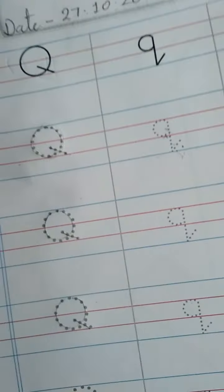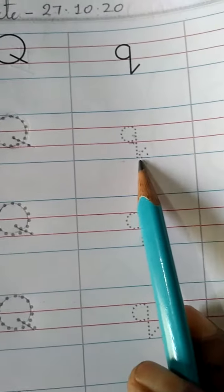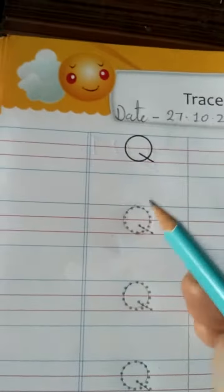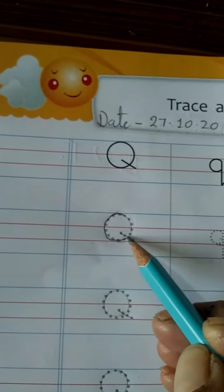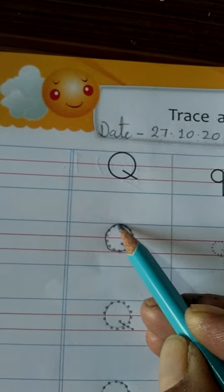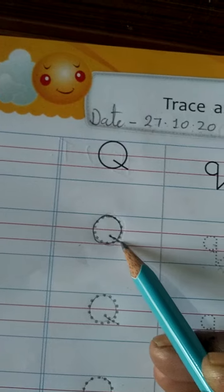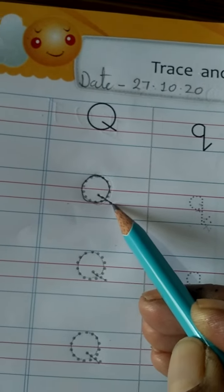Let's start. Now, let's see how to trace capital letter Q and small letter Q. Start from the top, draw a circle, draw a small slanting line to touch the bottom. This is capital letter Q.